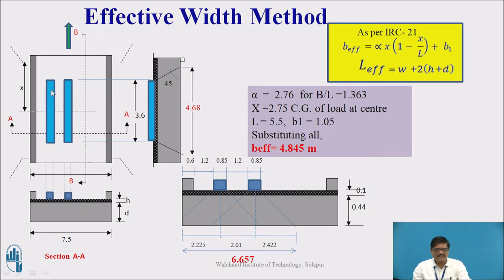Then x is the distance of the load from the nearest support. Here in this case, the load is placed exactly at the center because our intention is to get the maximum bending moment. Therefore, the distance from the nearest support is half of the span, which is 2.75 meter. The length L is 5.5 meter and B1 is 1.05. B1 means this particular dimension after the dispersion through the wearing coat, whatever width we get. Through the wearing coat, the dispersion is considered at an angle of 45 degrees.